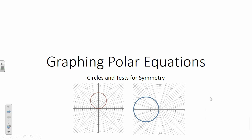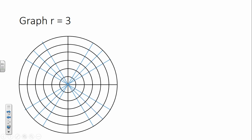We're going to be graphing and talking about tests for symmetry. If we were asked to graph R equals 3, what are we going to do? Make a circle around 3. So 1, 2, 3 out, and we just follow this lovely circular pattern — that is R equals 3. So that's the easiest circle to make.